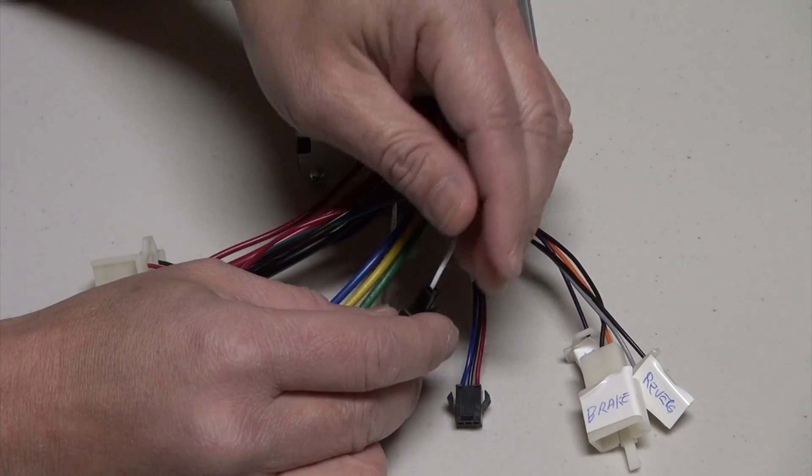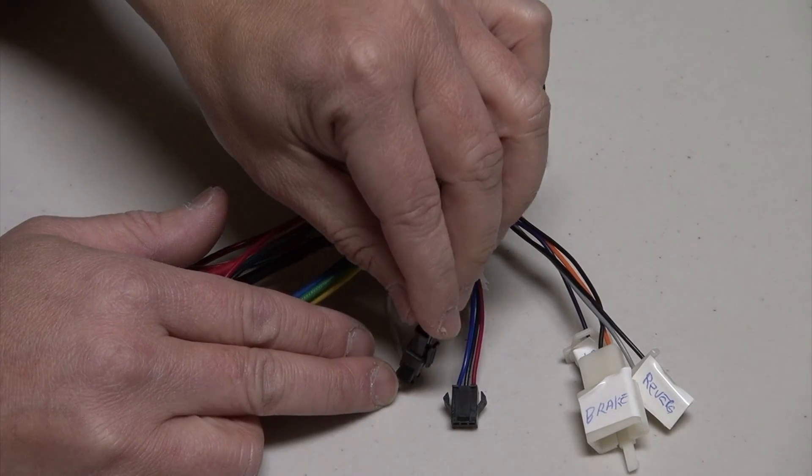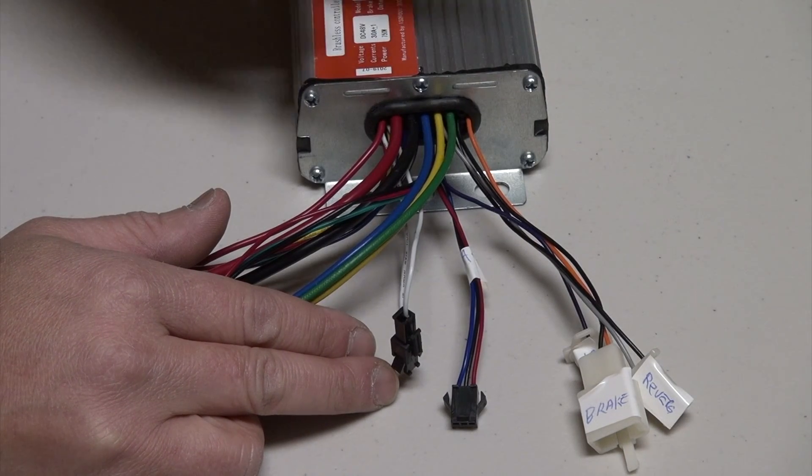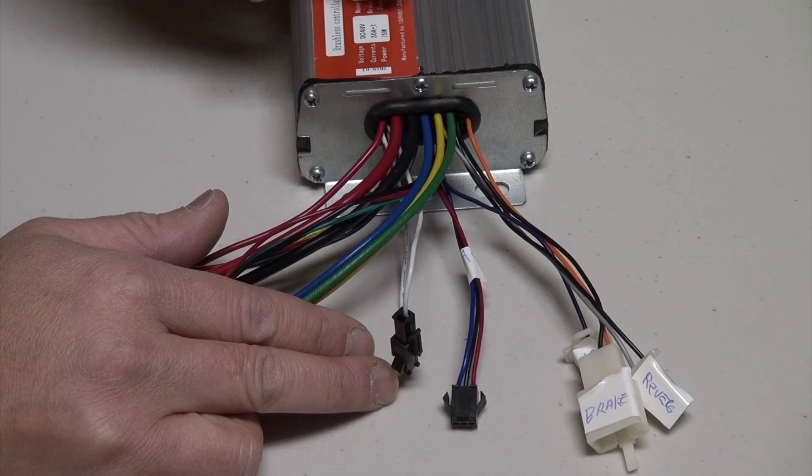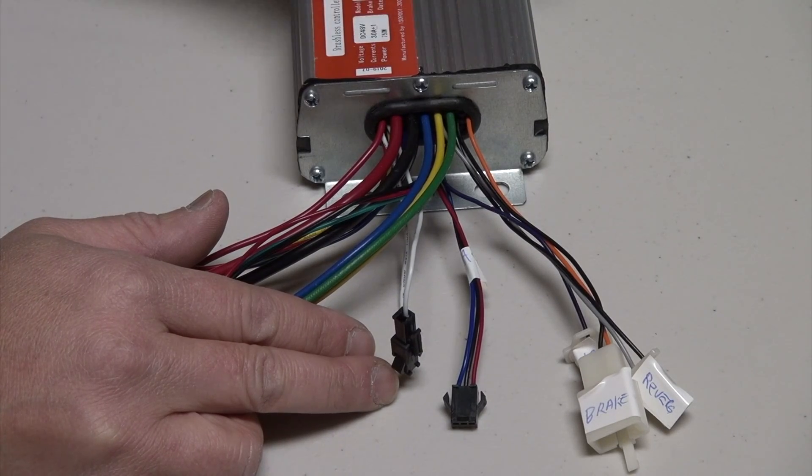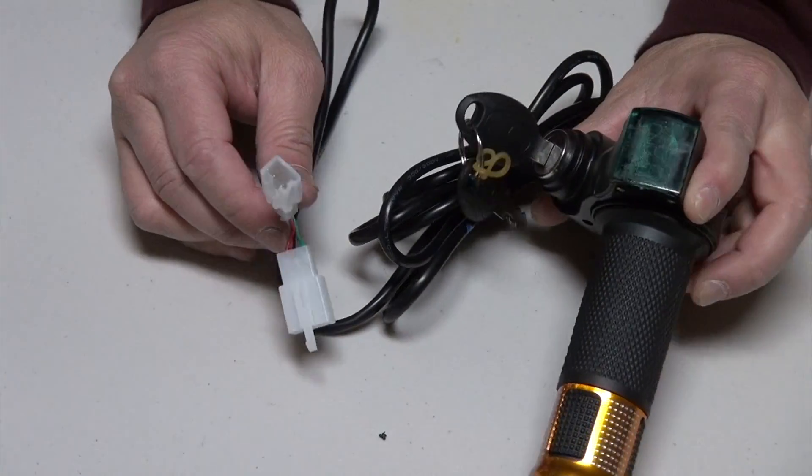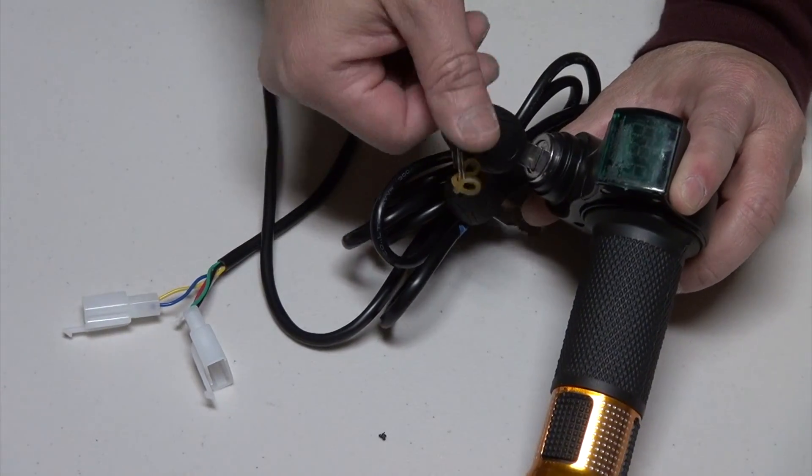These here, we have the self-learning wires. What you can do is you can connect these two together, especially if you're working on a different motor. Connecting these together will teach the controller about how the motor functions so that it can activate accordingly.